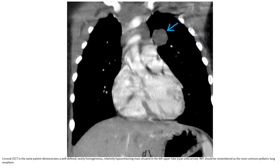Coronal and axial CT in the same patient demonstrates a very well-defined, nearly homogeneous, relatively hypo-enhancing mass situated in the left apex. IMT should be remembered as the most common pediatric primary lung myofibroblastic tumor.